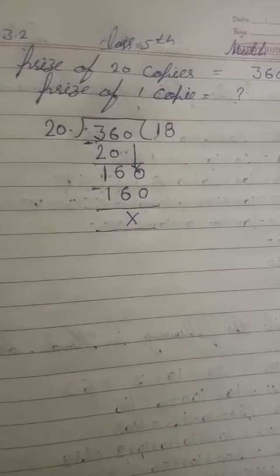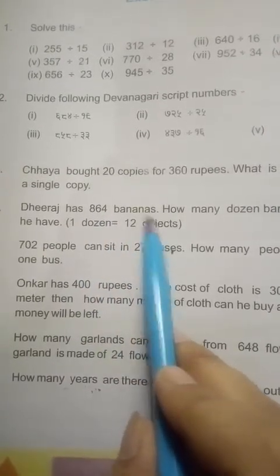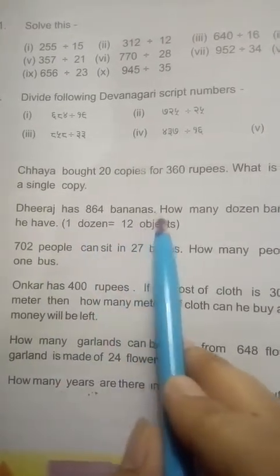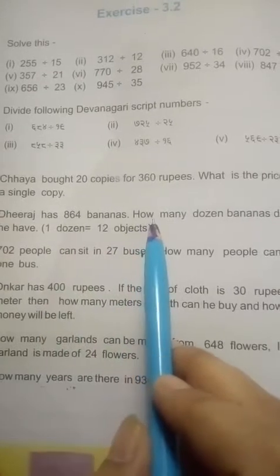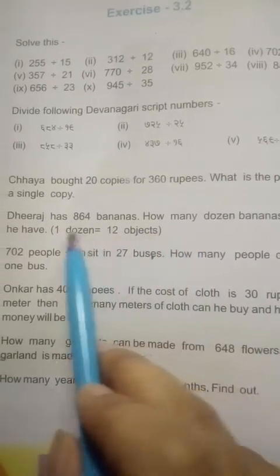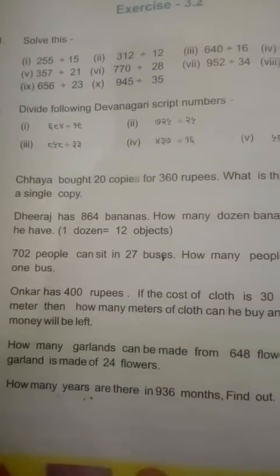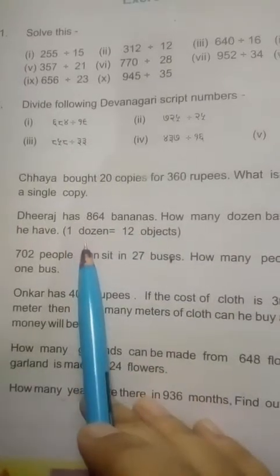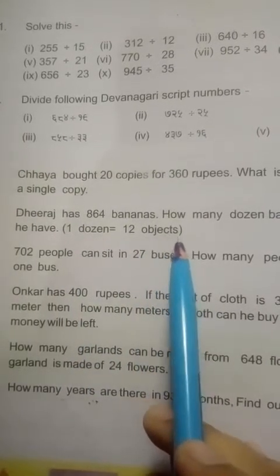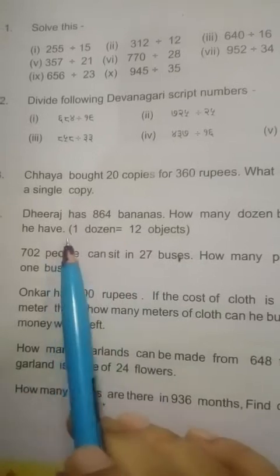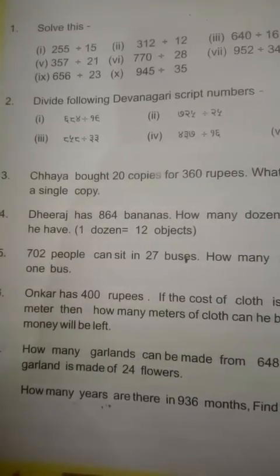Question number 4. Read out question 4: Dheeraj has 864 bananas. How many dozen bananas does he have? In this question, we convert the number of bananas into dozens. And we know that one dozen equals 12 objects. So write first the statement of this question.